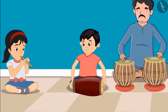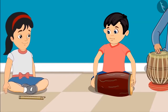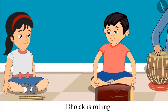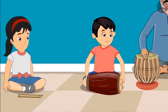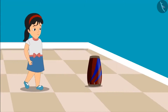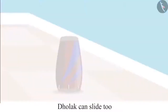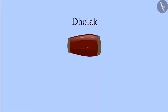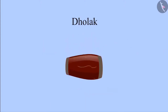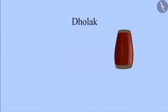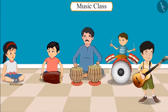Chotu, I also want to play dholak — please give it to me. Pinky, this dholak is rolling. Yes Chotu, because the surface of the dholak is circular, that's why. After some time, Pinky looked at another dholak. Hey Chotu, just see — we can also slide this dholak. Yes Pinky, you are right. This means that the dholak is round from one side and not round from the other side. The dholak will roll if it is on the round surface and will slide if it is on the surface which is not round. This means we can roll the dholak as well as slide it.